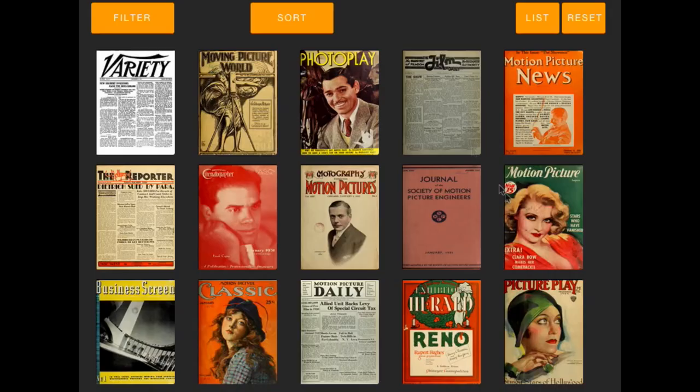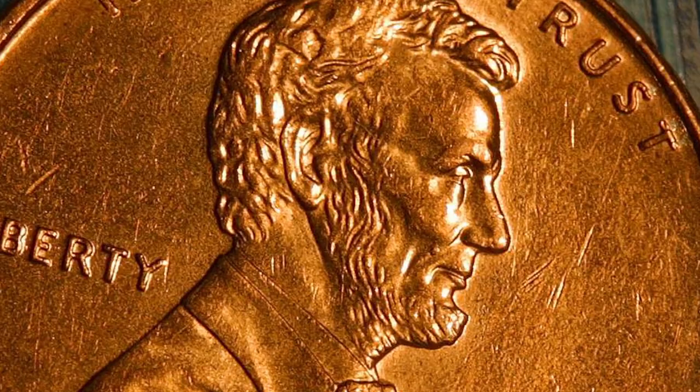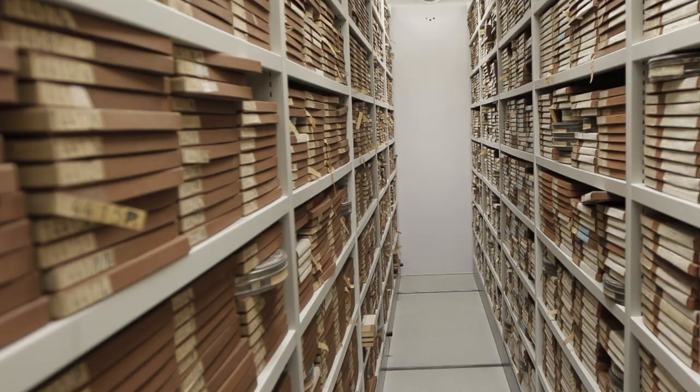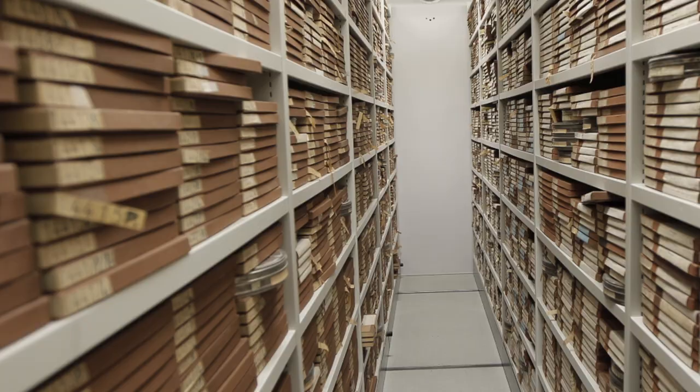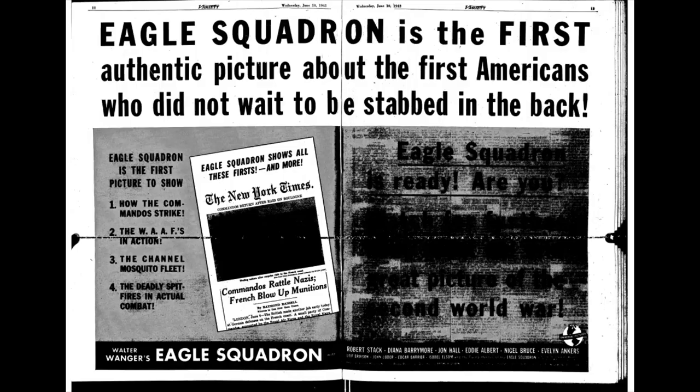Instead of just assuming a certain actor lost popularity in the 1940s, we should also consider that many of the fan magazines in the Media History Digital Library corpus only go up to the 1940s. This can be due to several reasons: copyright, budget restrictions, access, or availability, all of which affect the relationship between the corpus and the digital.